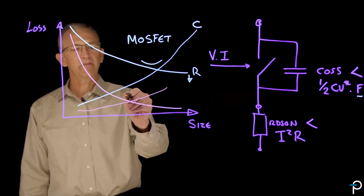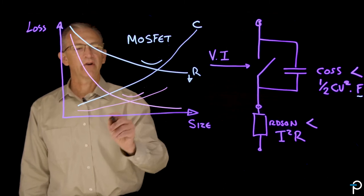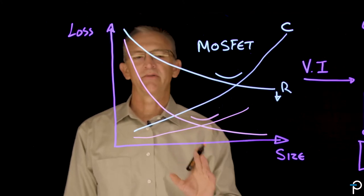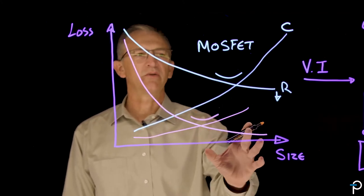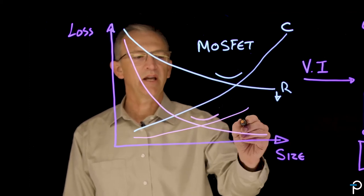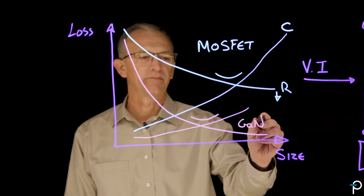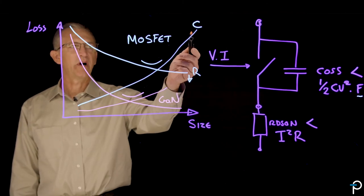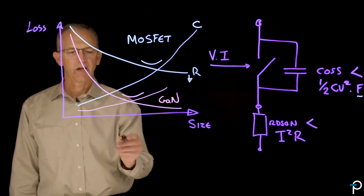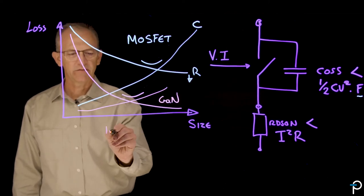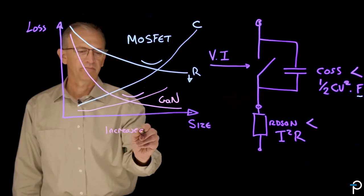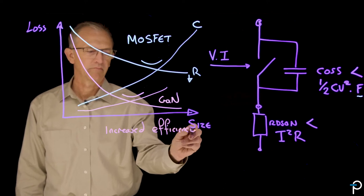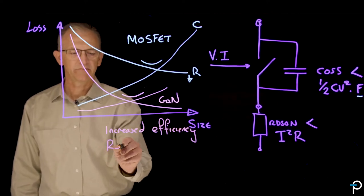So gallium nitride losses occur at a minimum around about here. And you can use that to your advantage because there are things you can do with gallium nitride that are simply impossible with a MOSFET. So the benefits of the reduced losses when the combined COSS and RDS on losses is increased efficiency, reduced heat dissipation.